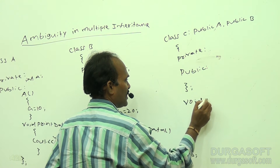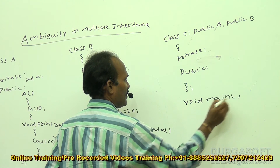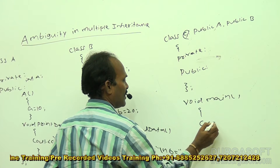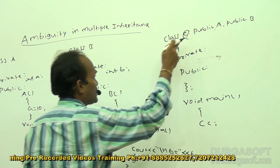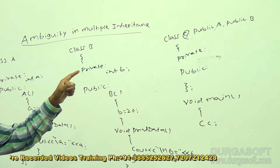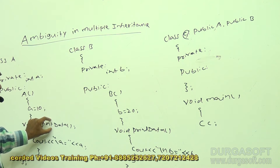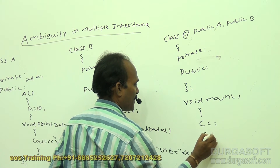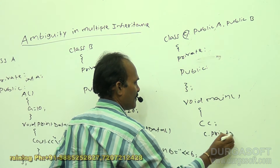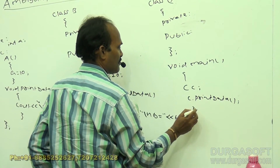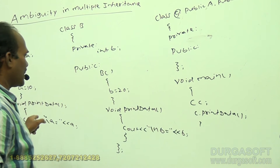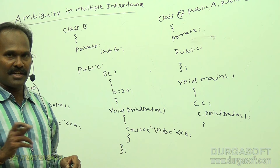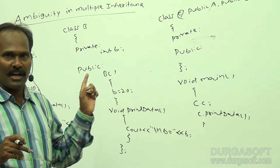In the main function, I am creating an object for class C. Class C is created from class A and class B, so the print data method will be available from two classes. When I say C dot print data, the question is which method is invoked — the print data method from class A or class B? The compiler is going to get confused and cannot resolve this problem. This is called the ambiguity problem.